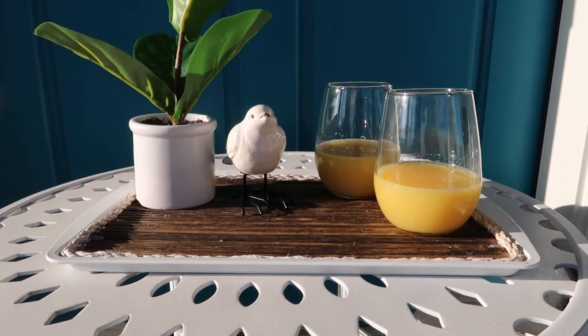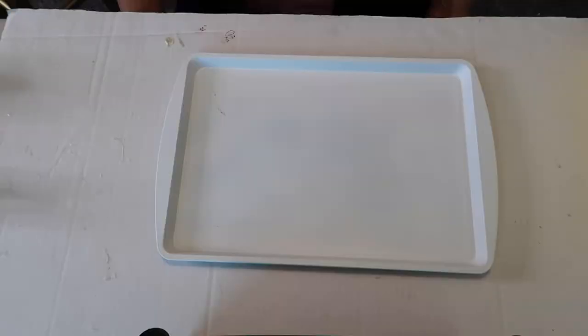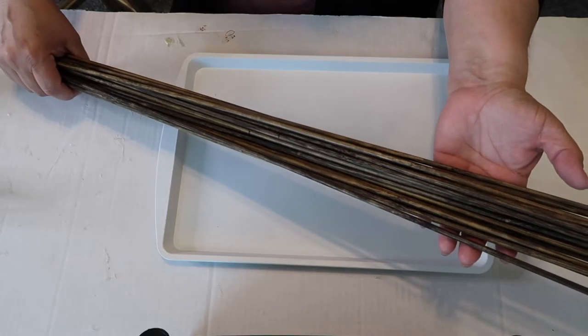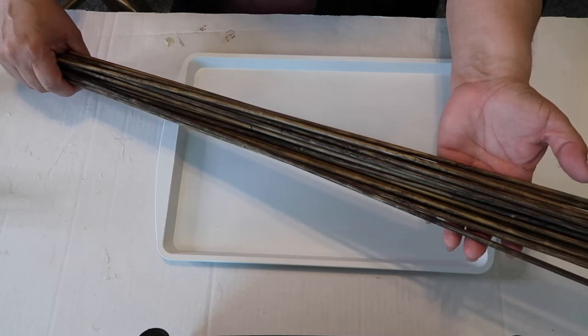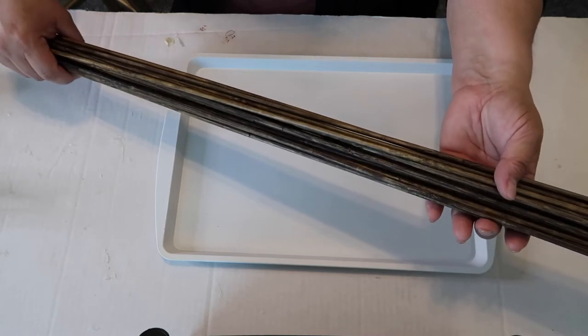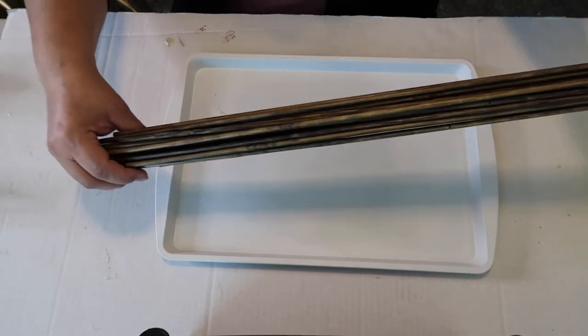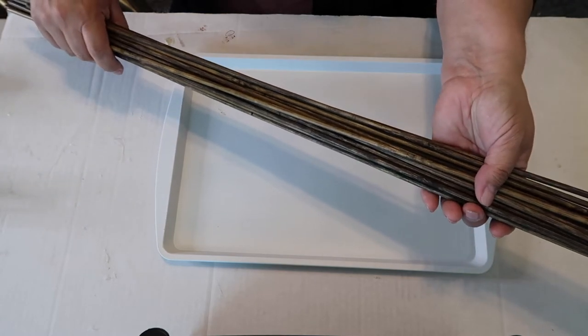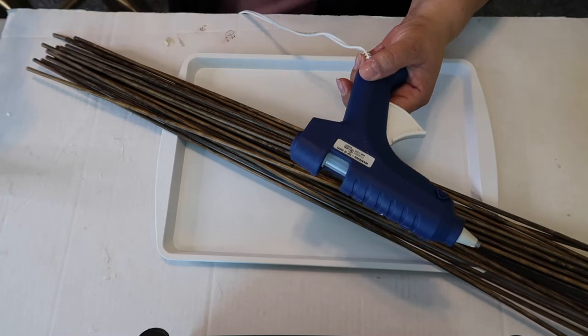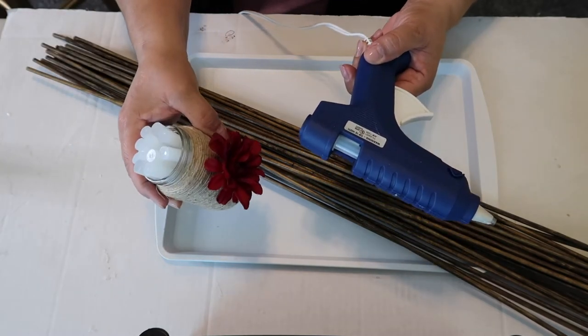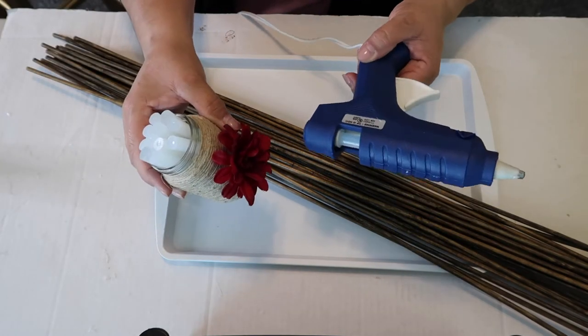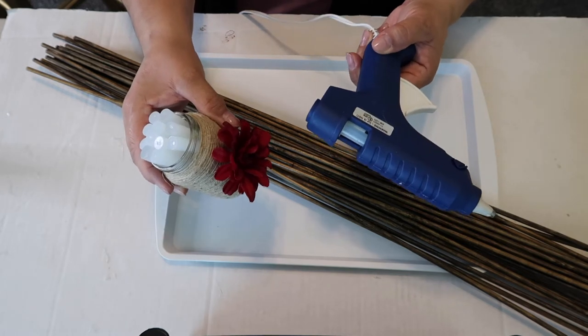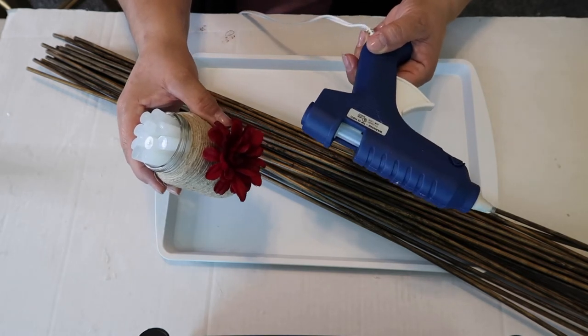Today's project is a bamboo skewer tray so let's get started. All you're gonna need is a cookie pan and I spray painted mine white. You'll need some bamboo skewers that I also got from Dollar Tree. These I stained with some stain I already had at home. I got the really long ones but you can get the smaller ones because we're gonna be cutting them down anyway. You'll also need a glue gun and some glue sticks. I don't know if the glue is going to really hold the bamboo skewers like I want to but we're gonna try it.